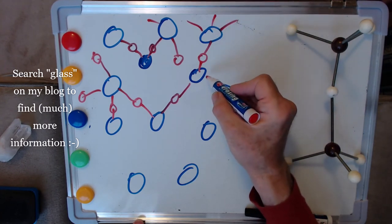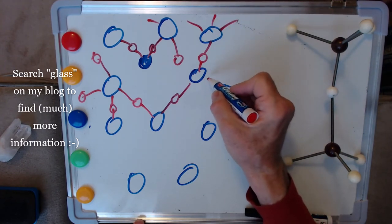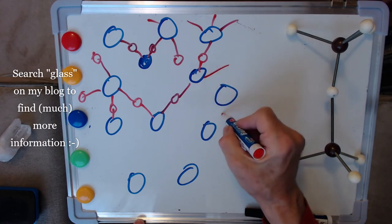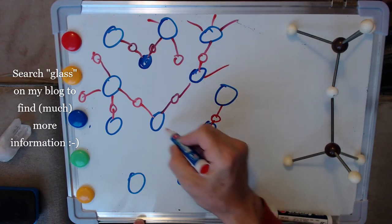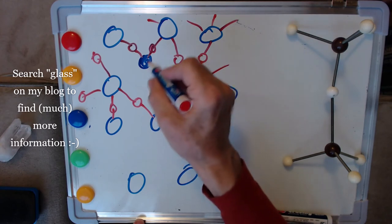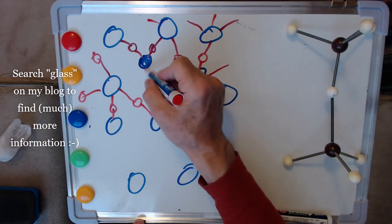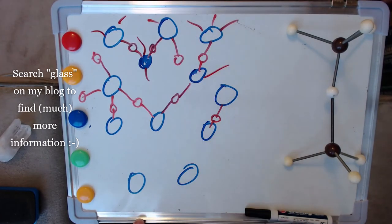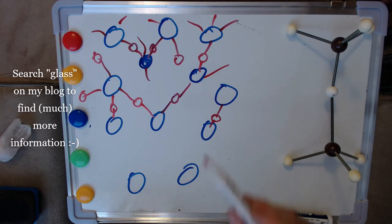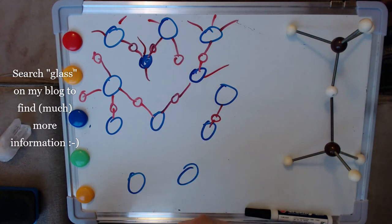So we end up with an arrangement whereby all of these atoms are actually linked together into a very rigid structure. You have to imagine this in three dimensions. It actually locks everything together. So that gives us something that's rigid.